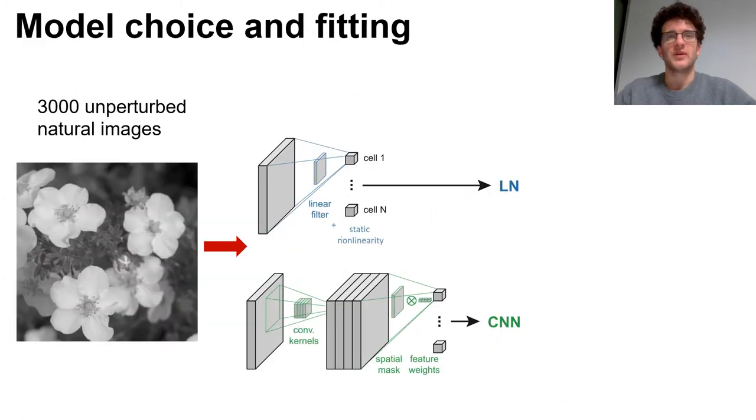To do that, we decided to use modeling. We trained two models, a simple LN and a deep convolutional neural network, and we trained them to reproduce the neural responses to a set of 3000 unperturbed natural images.